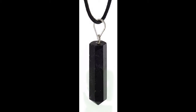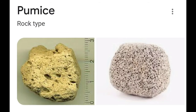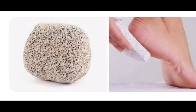Pumice is an extrusive rock. It is formed when lava with a high content of water and gases are discharged. This is the only rock that floats on water.